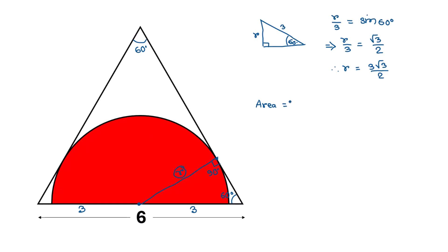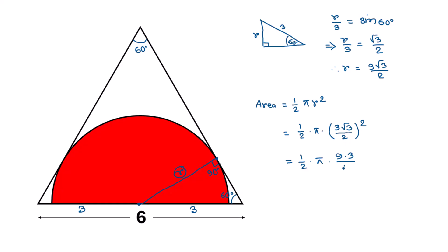The area of the semicircle is half the area of a full circle, which is ½ × π × r². Substituting r = 3√3/2, we get ½ × π × (3√3/2)². This simplifies: 3² = 9, (√3)² = 3, and 2² = 4, giving us 9 × 3 × π divided by 2 × 4, which equals 27π over 8.